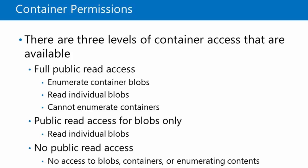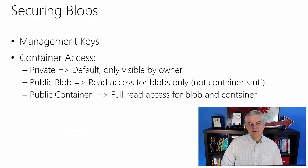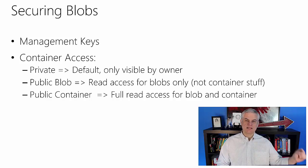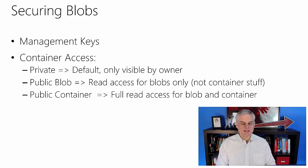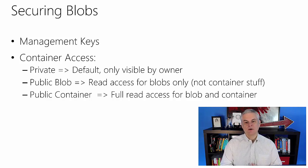The next is through a series of settings that you put on a container. As you're creating a new container, you can choose one of three different settings: either private, public blob, or public container. The private setting is the default container access value, so only this container is visible by the owner — you have to be logged in as the owner to work with the contents. You can make the individual blobs available for read access, but the user will not be able to see anything about other files or any information about the container itself. Public container is full read access for both the blob and the container and all metadata associated with both.